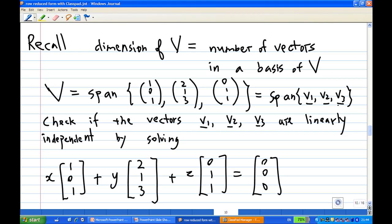Now, all we need to do is check whether these three vectors v1, v2, and v3 are linearly independent by solving the equation: x(1,0,1) + y(2,1,3) + z(0,1,1) = (0,0,0).